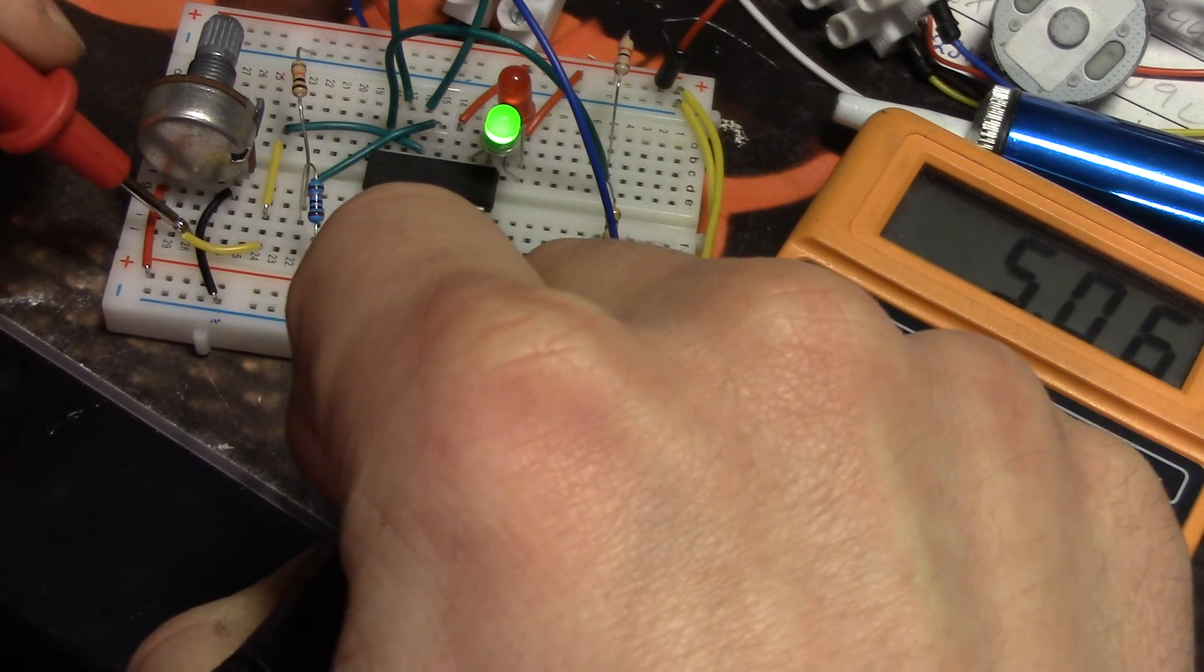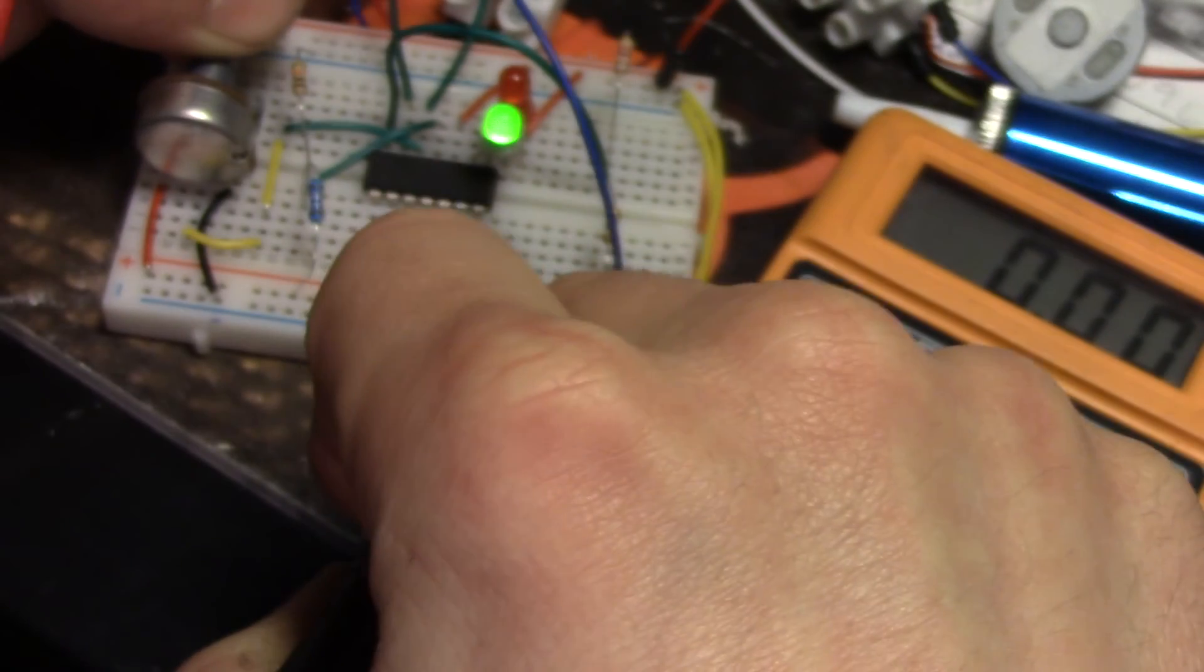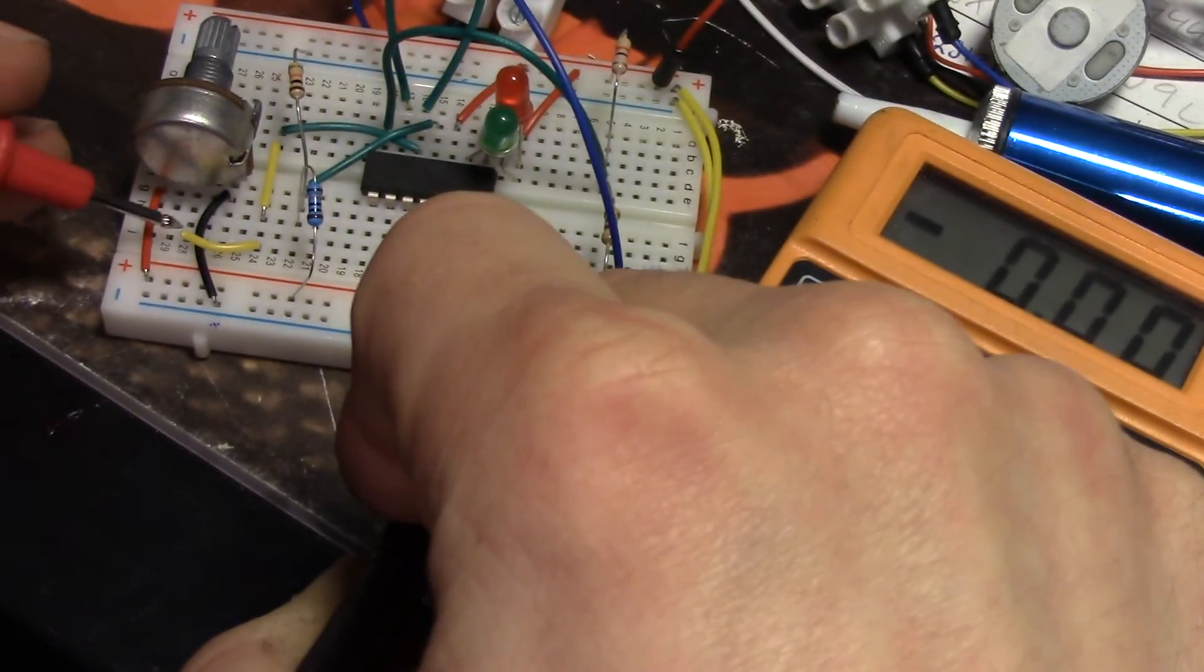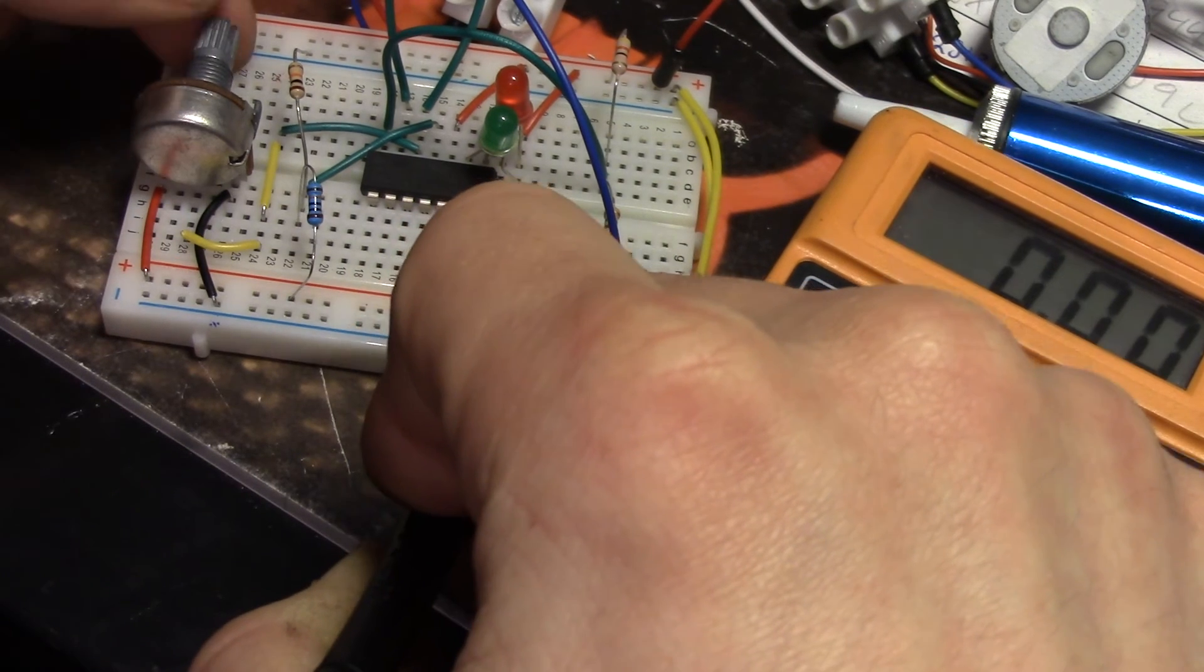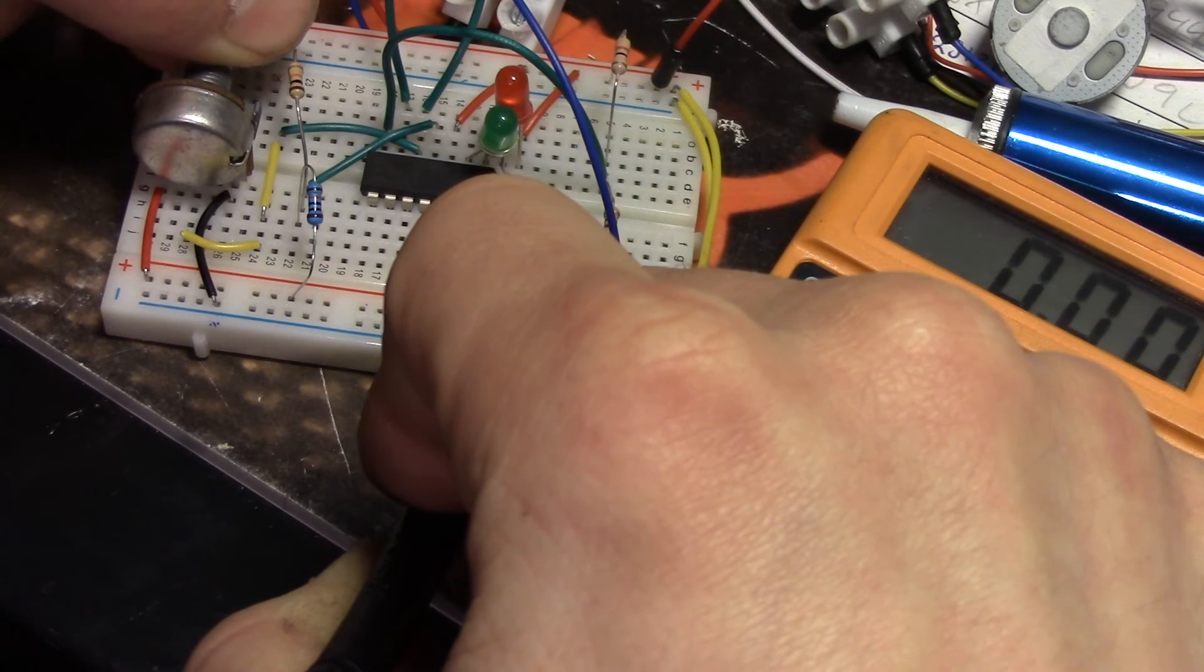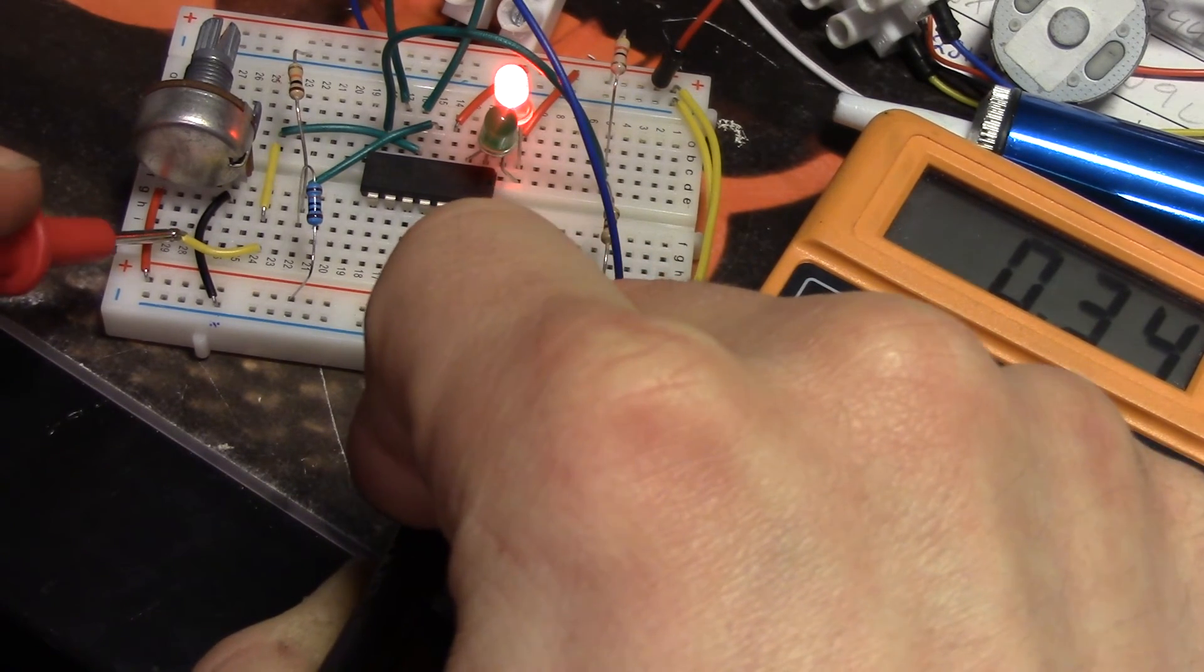Five volts, and I can turn it down, till the green LED goes off, and if we measure the voltage, we have three volts. And if I turn it even more down, the red LED will go on, and we have 0.3 volts.